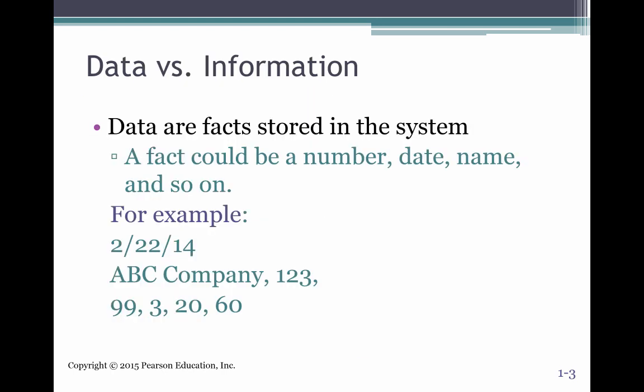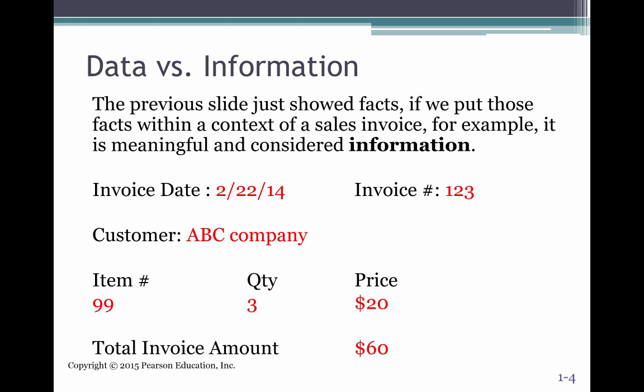First, let's talk about data and information. Data is basically just facts — numbers, dates. For example, you can have a date, maybe ABC Company, 123, 99, 320, 60 — all of that is just data. Now, when you take that data and actually show it with some type of context, then we have information.